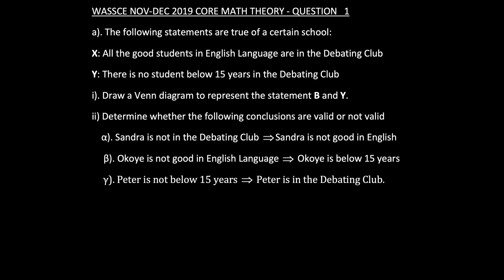The following statements are true of a certain school. X is such that all the good students in English language are in the debating club. Y is such that there is no student below 15 years in the debating club. Part I: Draw a Venn diagram to represent the statements X and Y.